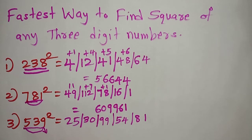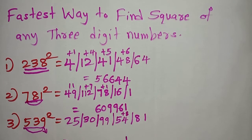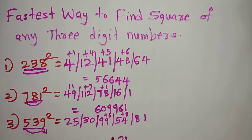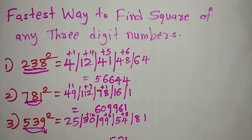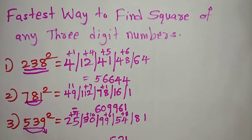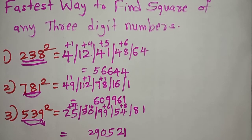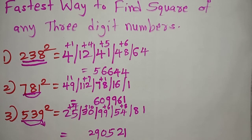Now the last step is we have to add to get the answer. Write 1 as it is and carry 8. Then 54 plus 8 is 62 — write 2 and carry 6. Then 99 plus 6 is 105 — write 5 and carry 10. Then 30 plus 10 is 40 — write 0 and carry 4. Then 25 plus 4 is 29 — write 29. So the answer is 2,90,521. This is the fastest way to find the square of any three digit number.